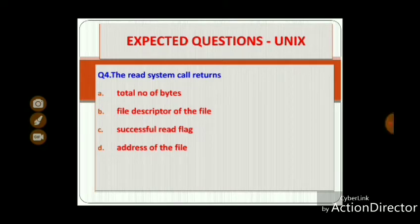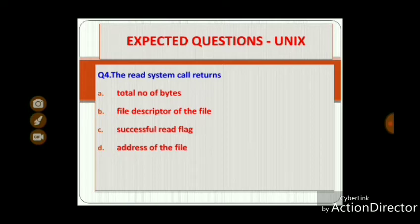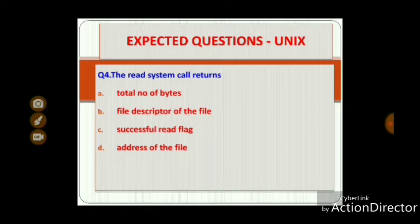Question 4: The read system call returns — Option A: total number of bytes, Option B: file descriptor of the file, Option C: successful read flag, Option D: address of the file. The correct answer is Option A — total number of bytes. The read system call takes 3 arguments: the file descriptor, the buffer where read data is to be stored, and the number of bytes to be read. It returns the number of bytes read.